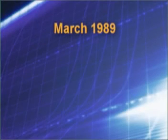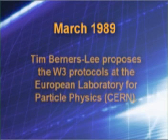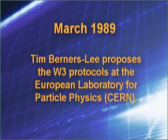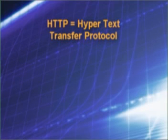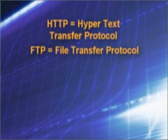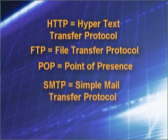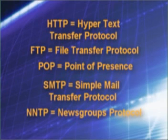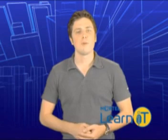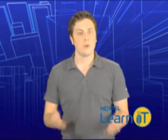In March 1989, Tim Berners-Lee at the European Laboratory for Particle Physics proposed a new set of protocols for Internet information distribution: HTTP (Hypertext Transfer Protocol), FTP (File Transfer Protocol), POP (Point of Presence), SMTP (Simple Mail Transfer Protocol), and NNTP (News Groups Protocol). These five protocols became known as the World Wide Web Protocols and were soon adopted by the Internet community.